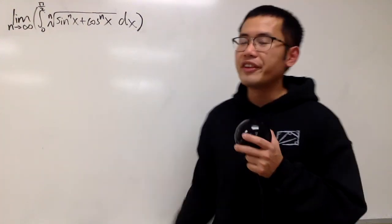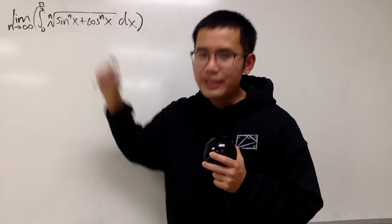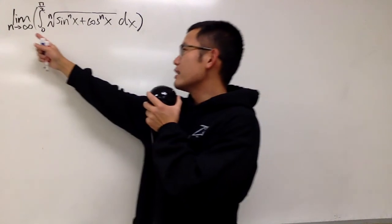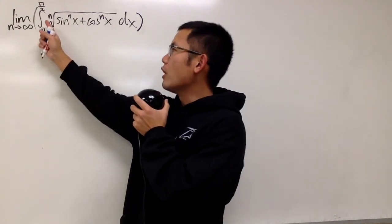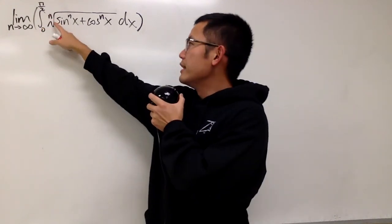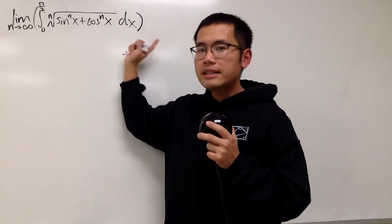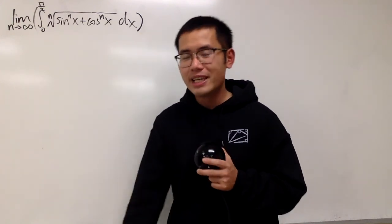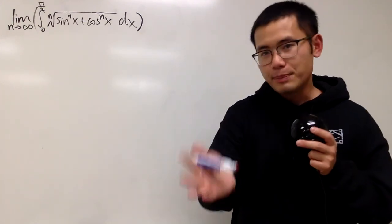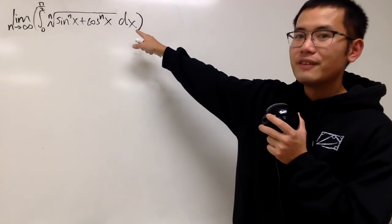Let's do some math for fun. Here I have this limit and integral for you guys: the limit as n goes to infinity of the integral from 0 to π/2 of the nth root of sin^n(x) plus cos^n(x) dx. Please pause the video and try this first.